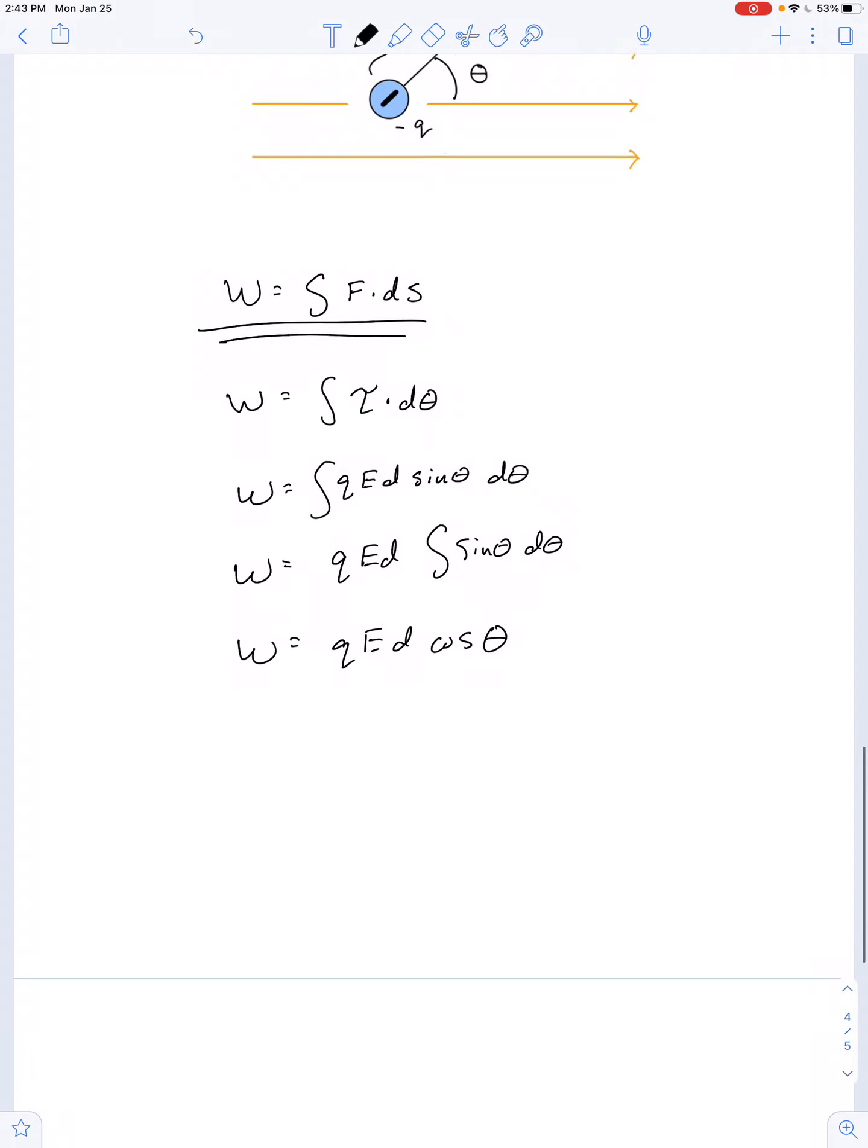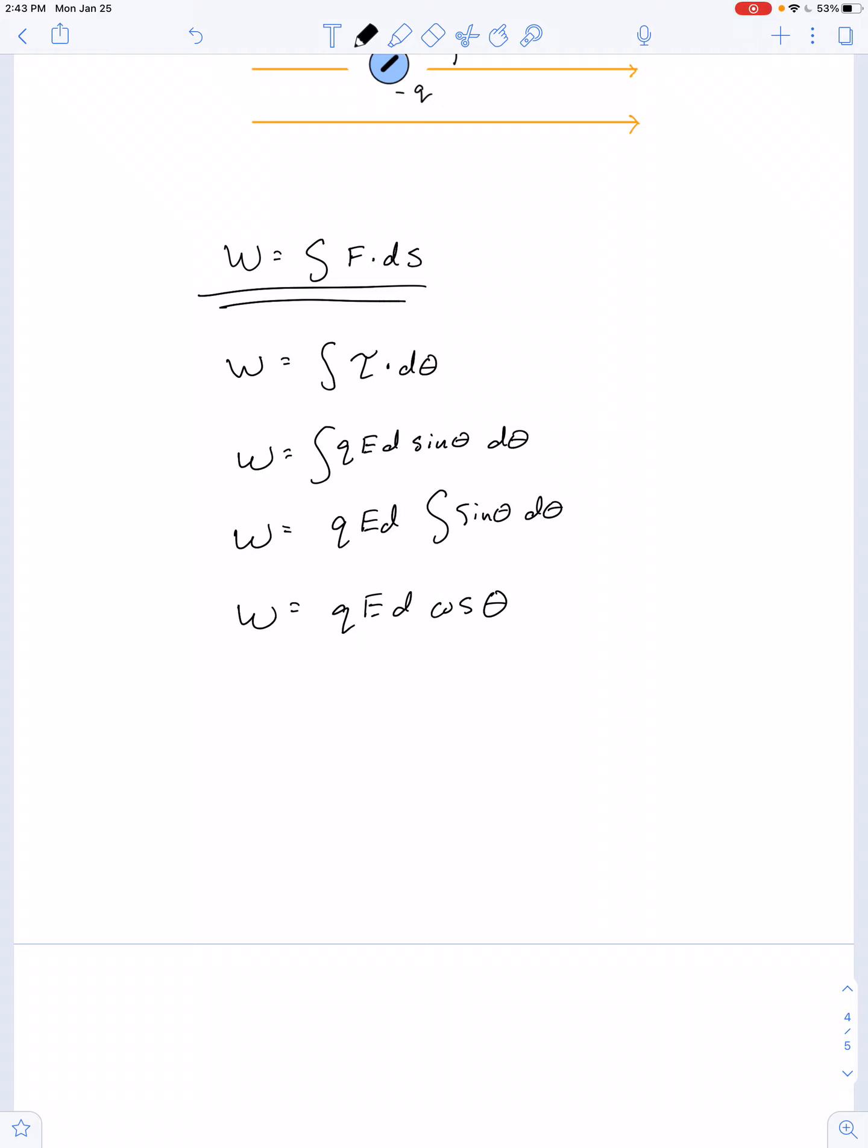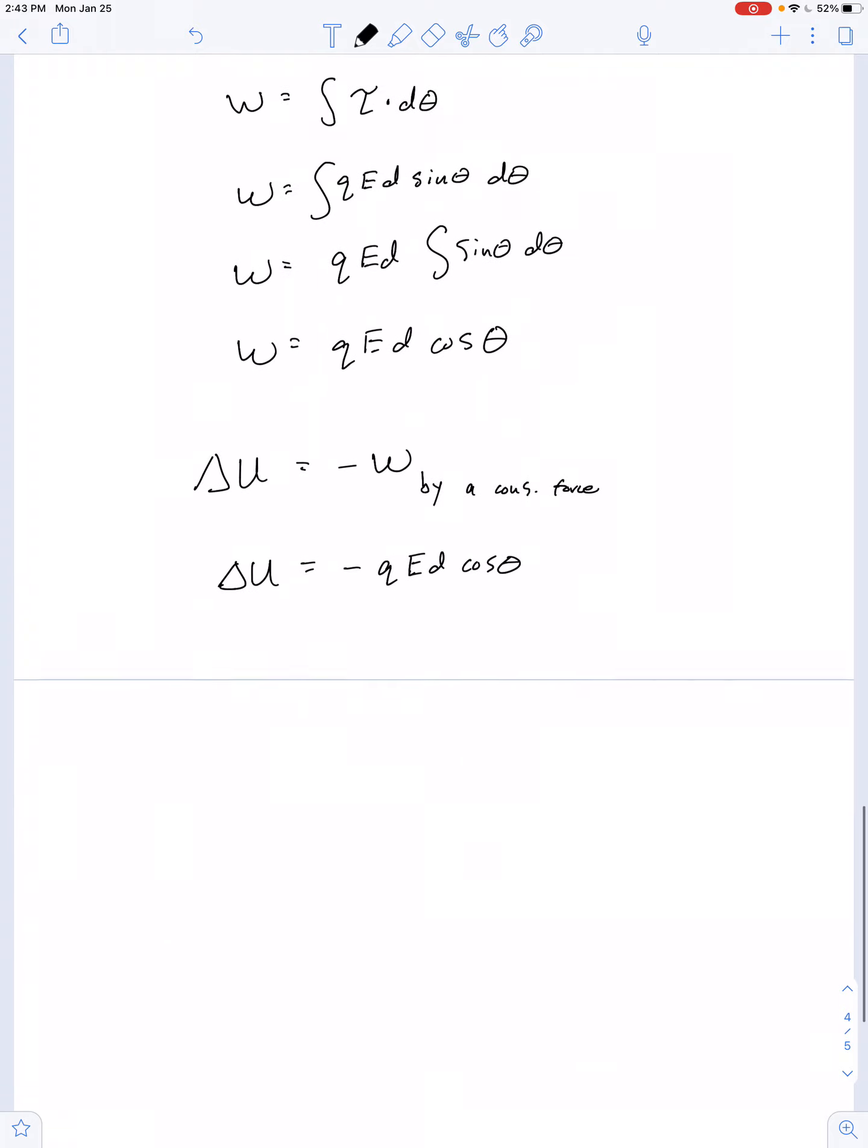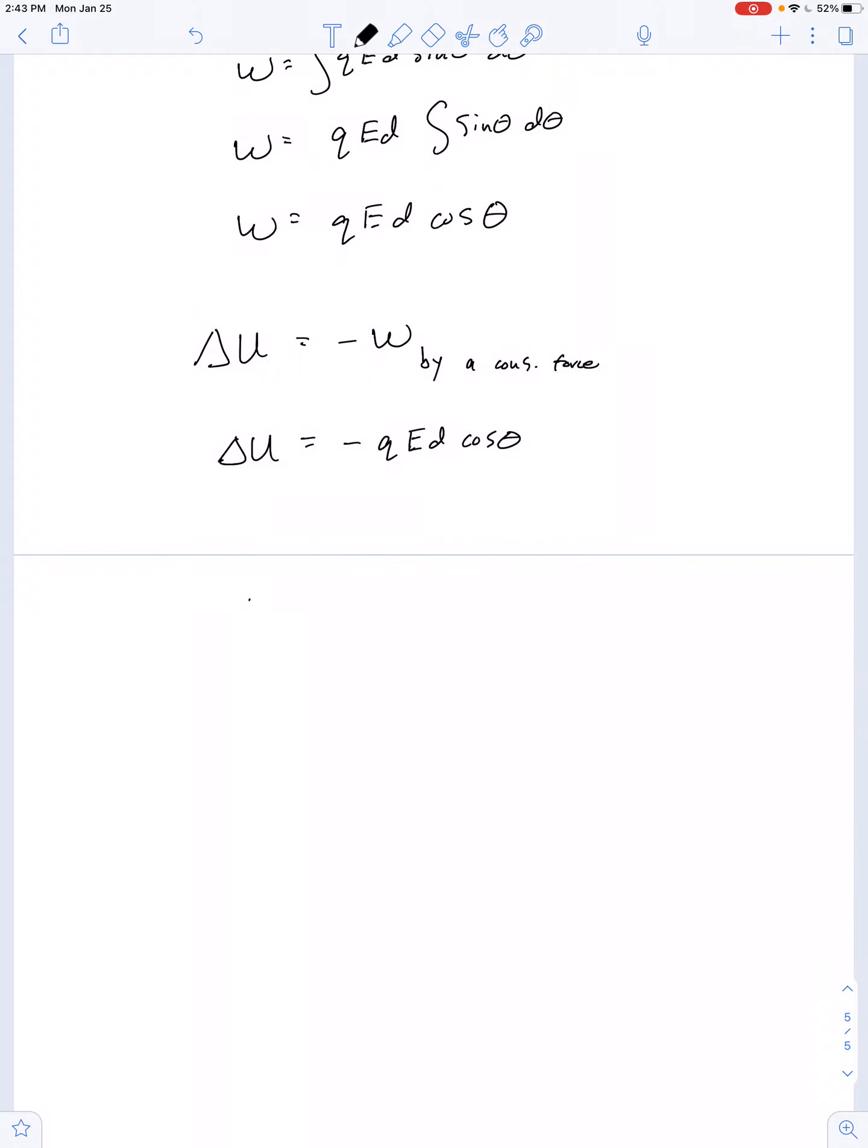And then you should also be familiar with the definition or the concept that the change in potential energy is always equal to negative the work done by a conservative force. Work done by electric fields is always conservative. And so the potential energy is negative QED cosine theta. And I'll leave it up to you to convince yourself that that's the same thing as the dot product. Notice we have the Q and D, so that's the magnitude of the electric dipole moment. So the potential energy on the dipole is equal to negative electric dipole moment vector dot product with the external field vector. Thanks for watching.